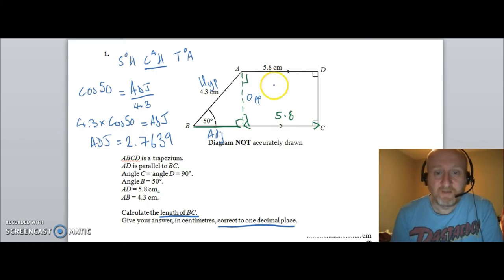But all I need to do now is add 2.7639 plus 5.8 and that will be the length of BC and adding those together and rounding them to and correcting them to one decimal place give me the answer of 8.6.